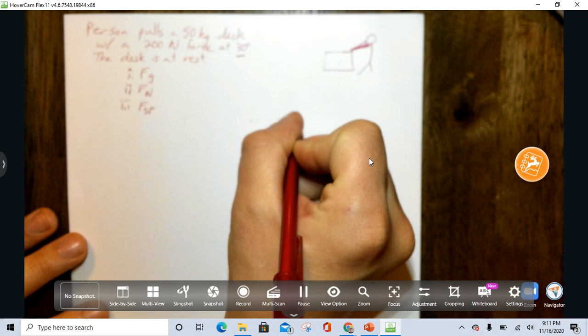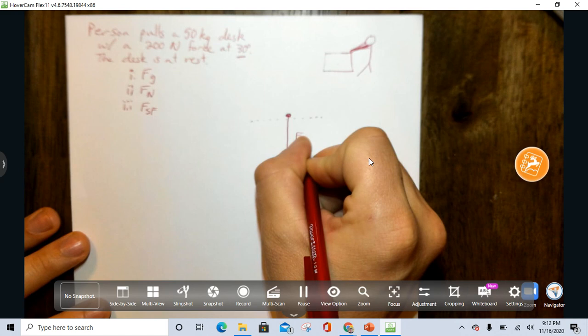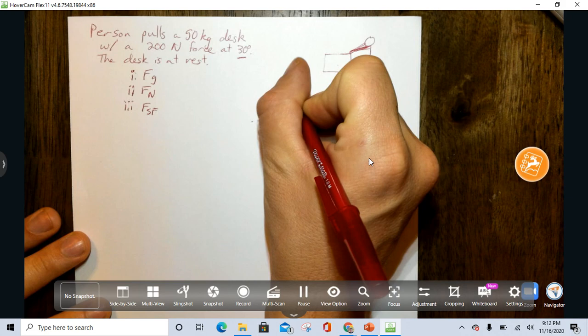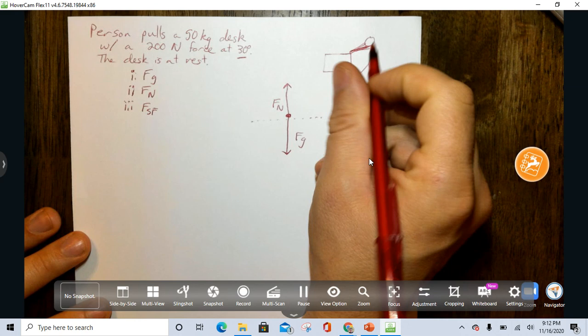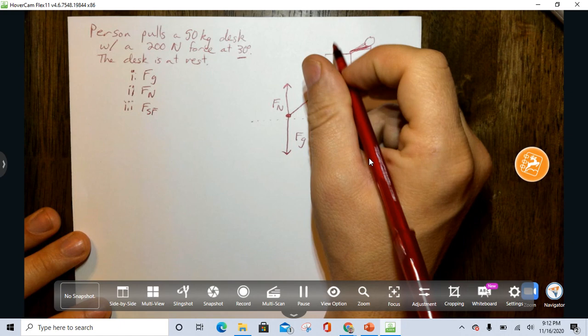So on a surface, it has mass, so let's put gravity. On a surface, so it's going to have normal force, and there's the angle here, angle force here, 200-newton force.